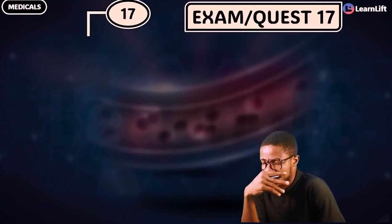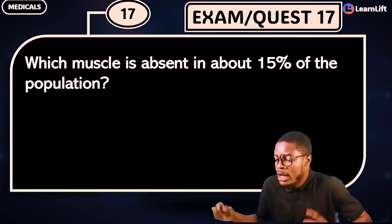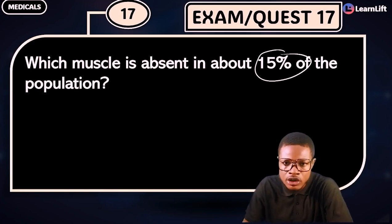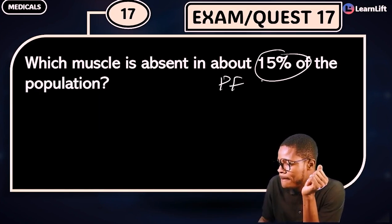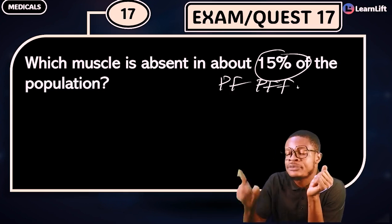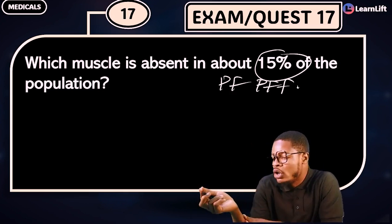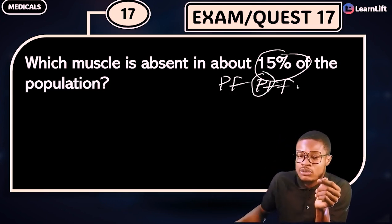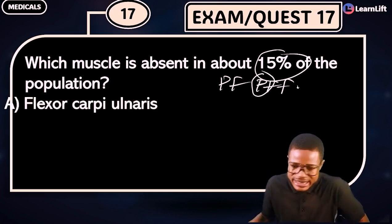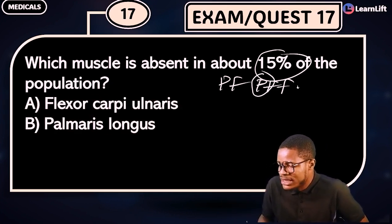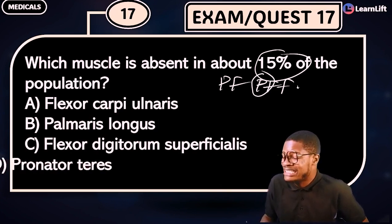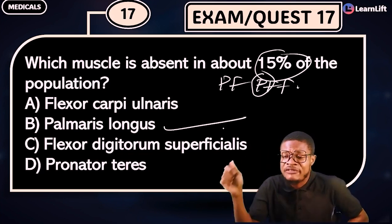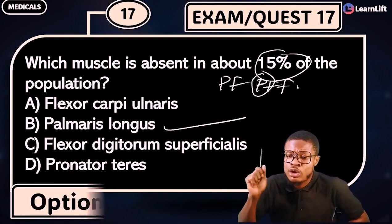Question 17: Which muscle is absent in about 15% of the population? From your PF-PFF group, there is one whose tendon is absent in about 15% of the population — it is the long one. That's the Palmaris Longus. Option A: Flexor Carpi Ulnaris. Option B: Palmaris Longus. Option C: Flexor Digitorum Superficialis. Option D: Pronator Teres. The correct answer is Option B — Palmaris Longus.